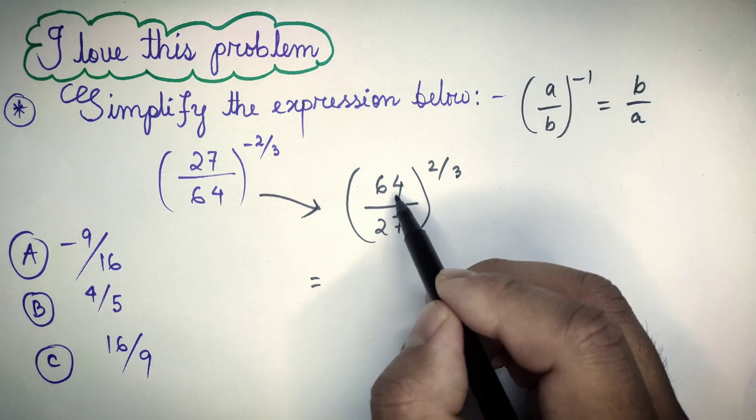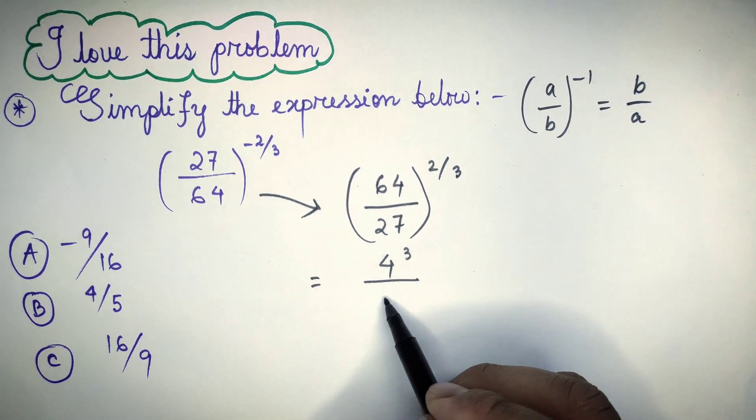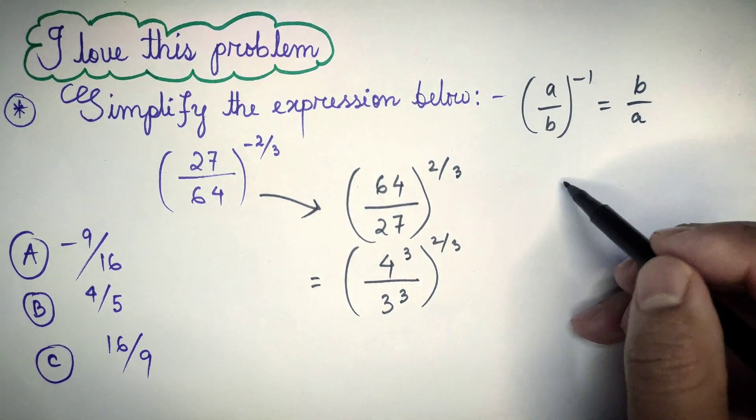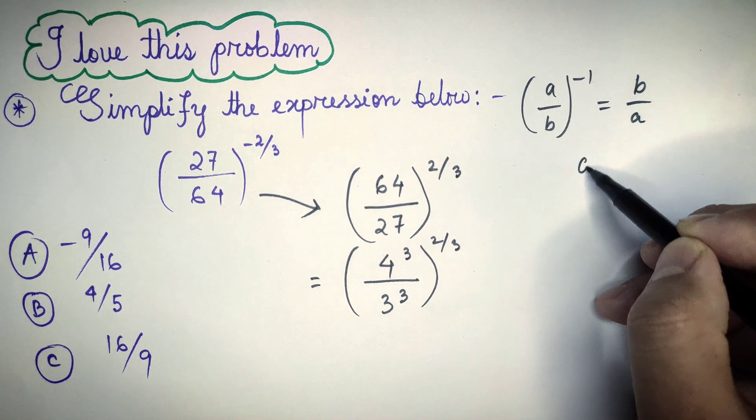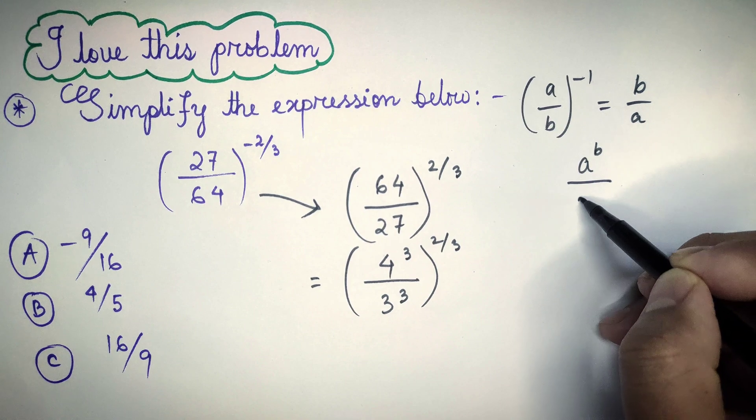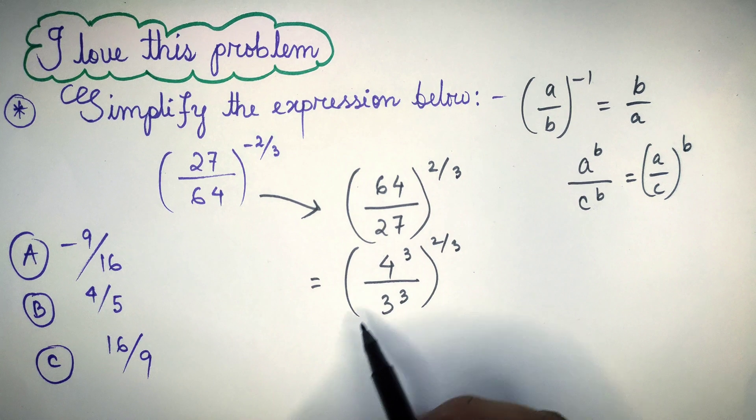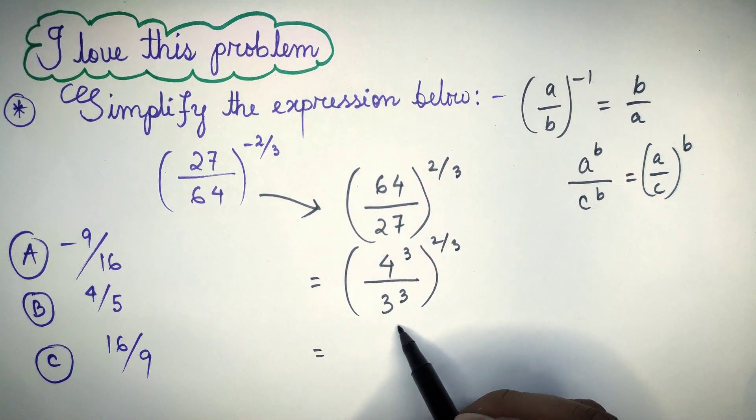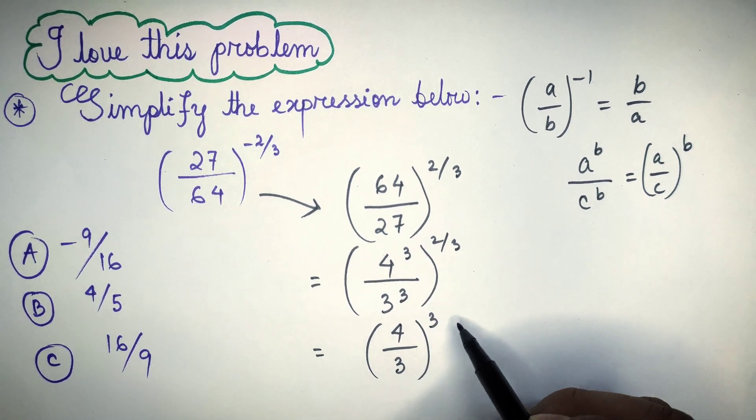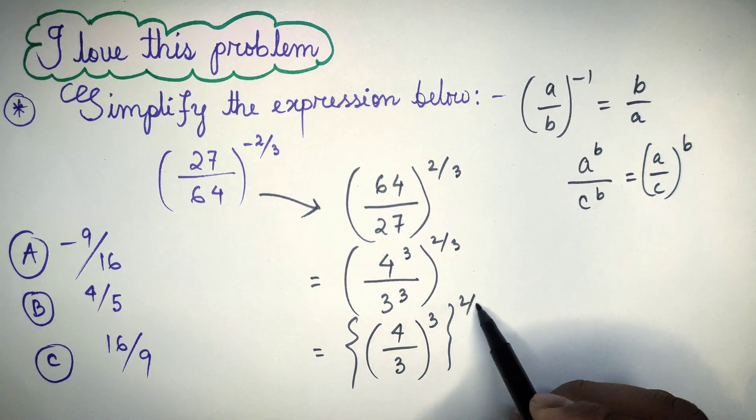After this, we can write 64 as 4 cubed and 27 as 3 cubed, whole to the power 2 by 3. We know that any number to the power A to the power B and C to the power B is equal to A by C whole to the power B. So, taking cube as common and this will be written as multiplied by 2 by 3.